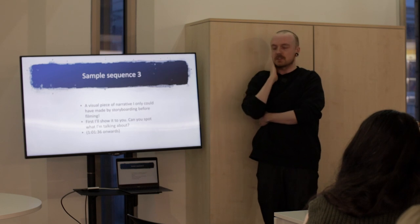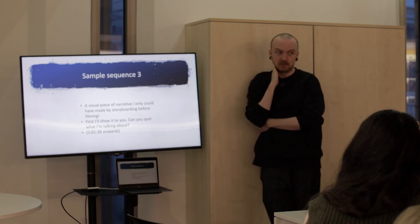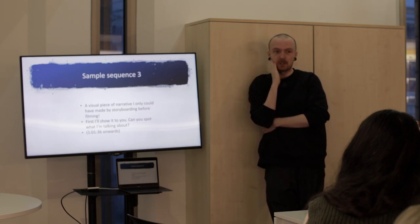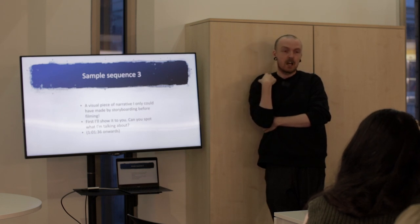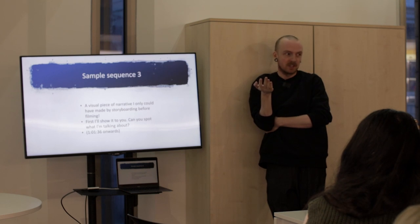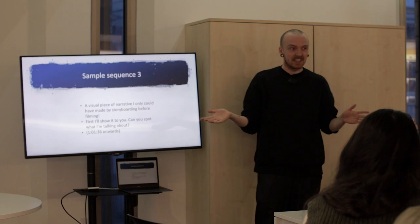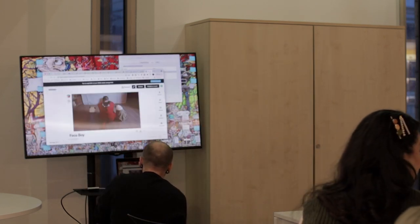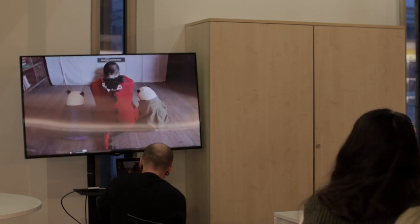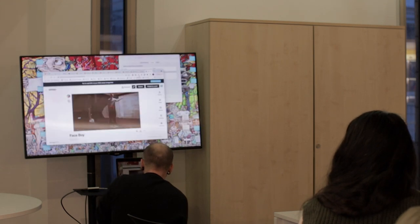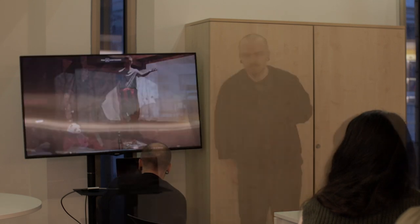This third sequence is a visual piece of narrative I could only have made by storyboarding before filming. I'll show it to you — can you spot what I did with the order of these images that I'm very proud of? Nobody I've shown this to is impressed by it, but I will explain what I did afterwards. In this sequence Faceboy is having an argument with his parents. There's something that happened there that actually took a lot of planning, and I had to insist we shot certain things in a certain way to make it happen.